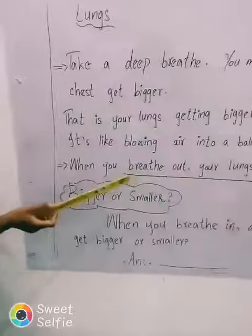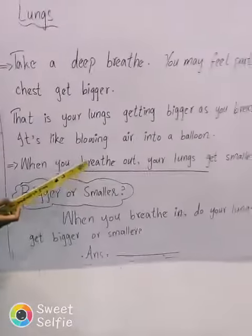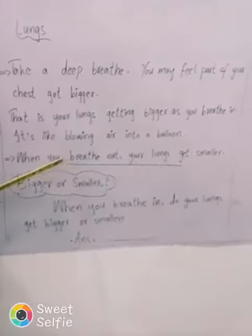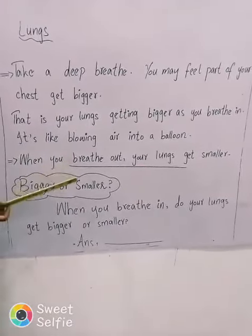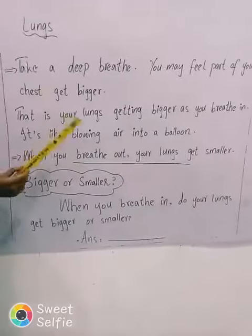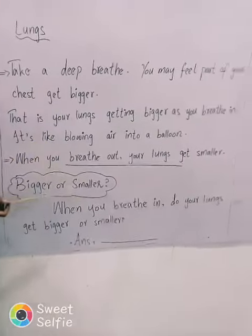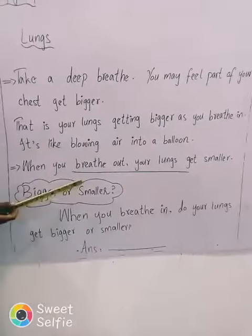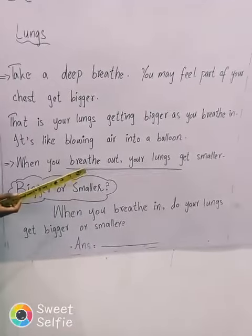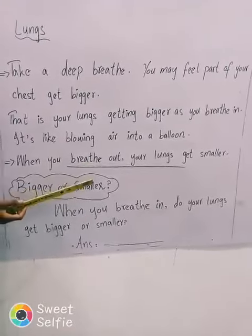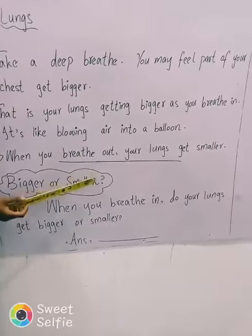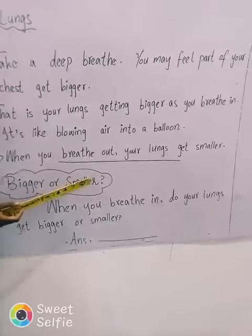Now let's look at the book. It is called the heart and the lung. The left lung is a little bit smaller than the right lung. Why does it look like that?